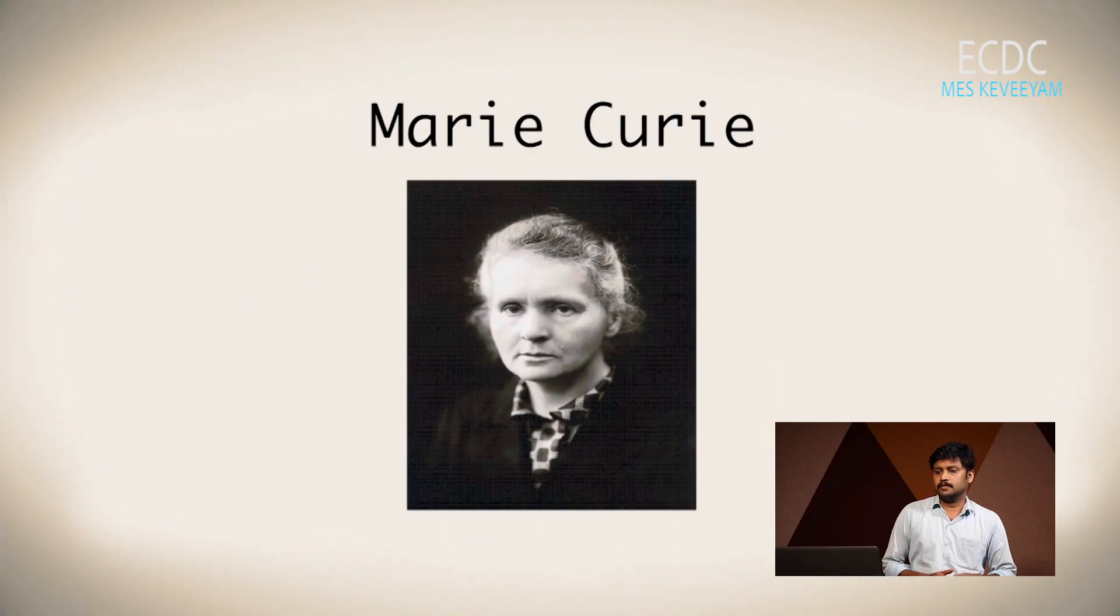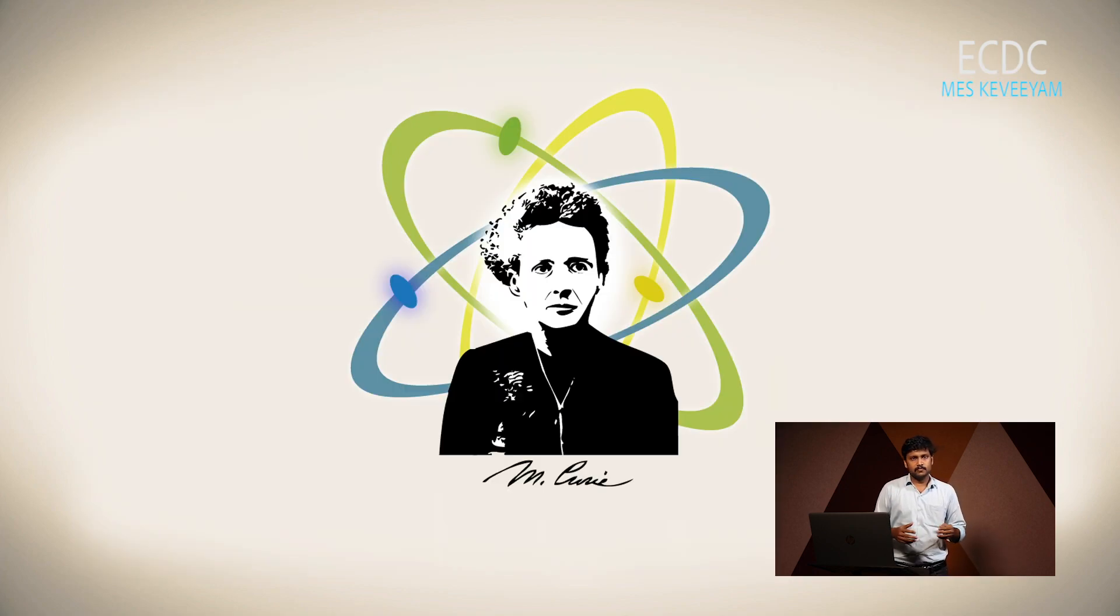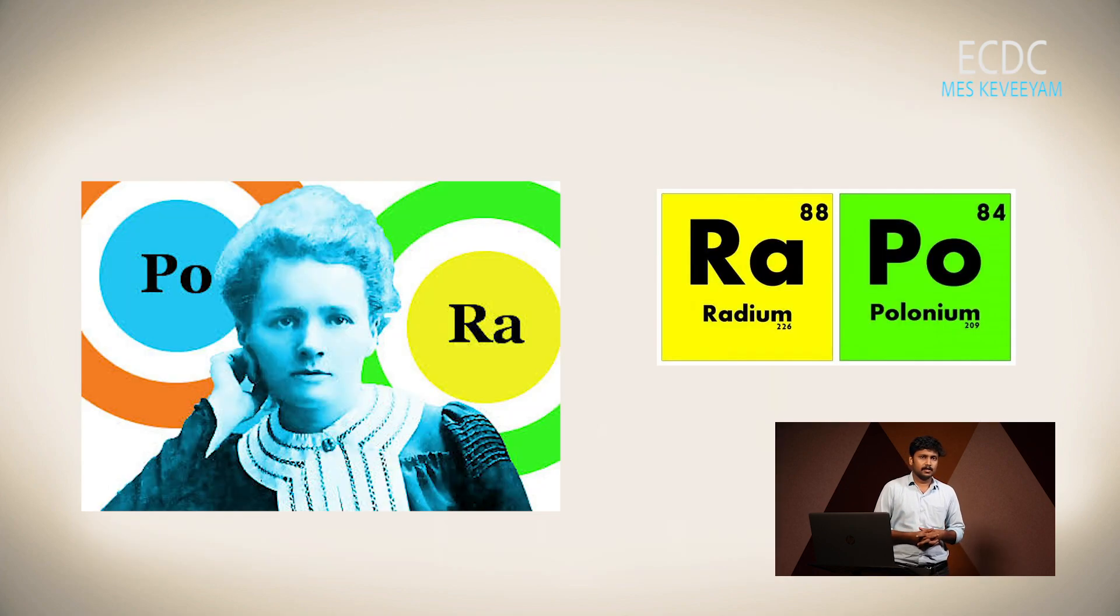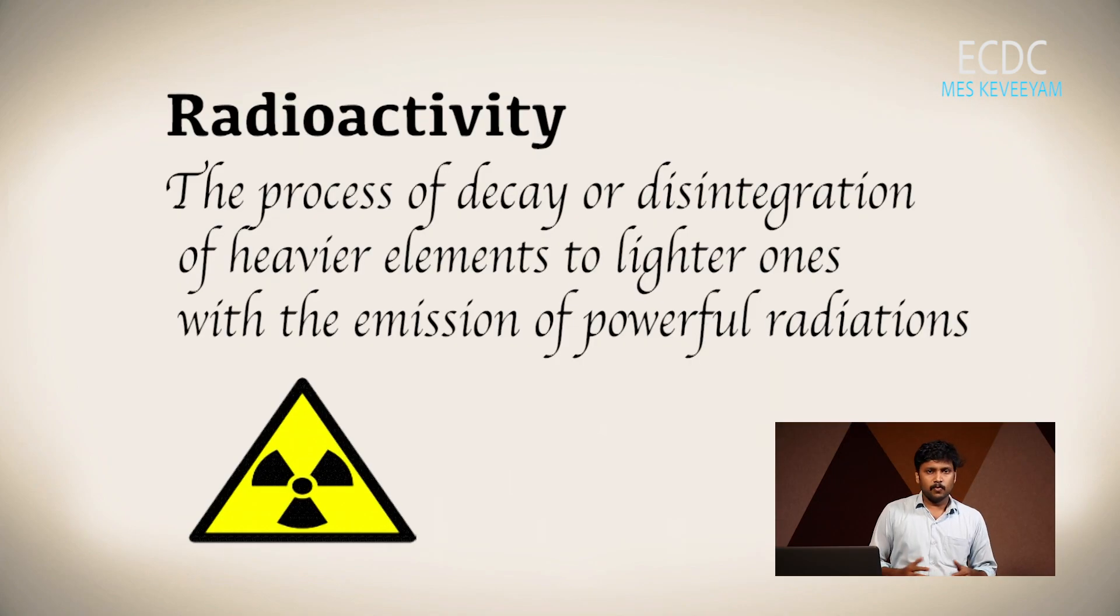Later, in 1898, Marie Curie did extensive experiments with these materials. She found two more radioactive materials: radium and polonium, and she gave the name radioactivity to this phenomenon. Radioactivity is the process of decay or disintegration of a heavier element to lighter ones with the emission of powerful radiations.